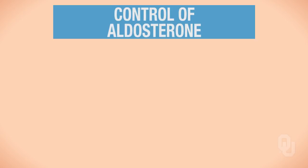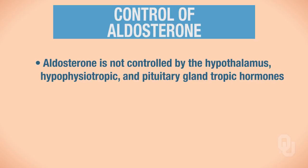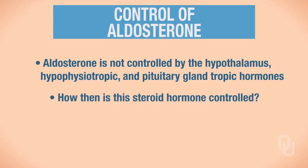Now let's think about how we control the release of aldosterone. Aldosterone is not controlled by hypothalamic hypophysiotropic and pituitary glandtropic hormones. In other words, aldosterone does not have a feedback loop like cortisol, thyroid hormone, growth hormone, or testosterone. So how do we regulate aldosterone release if it's not controlled via the hypothalamus or the hypophysioportal system?